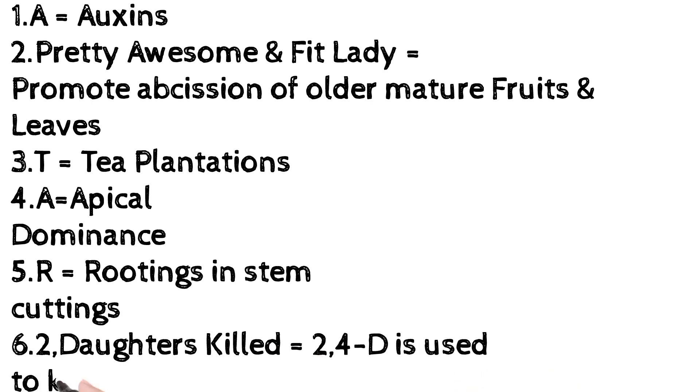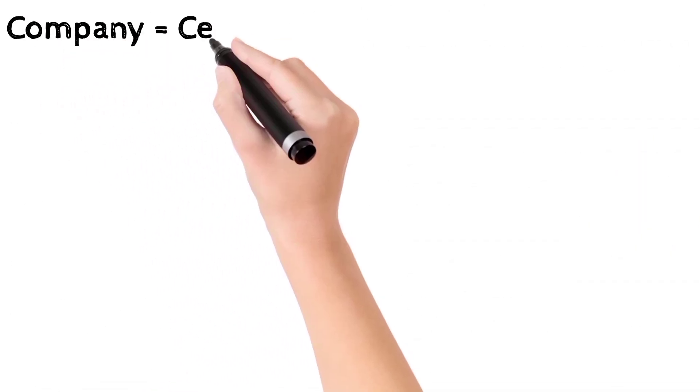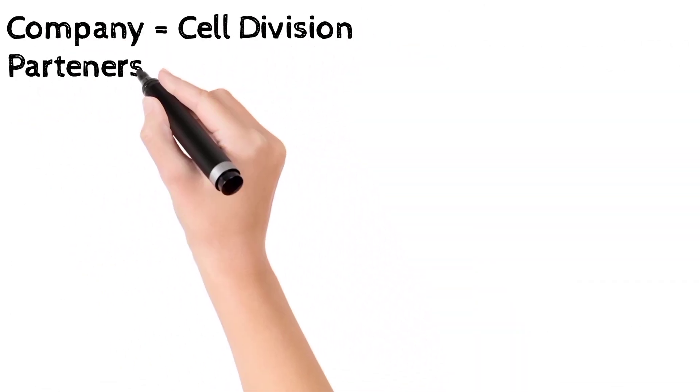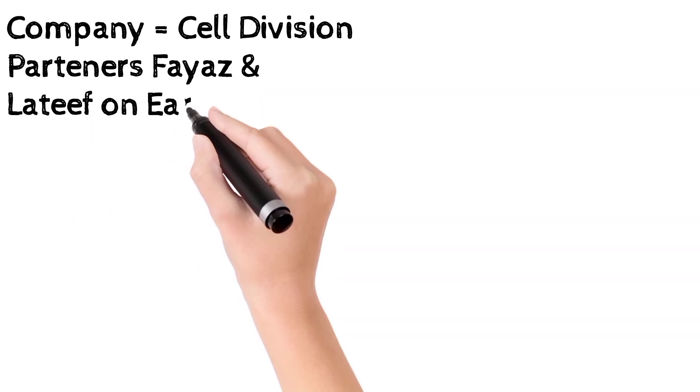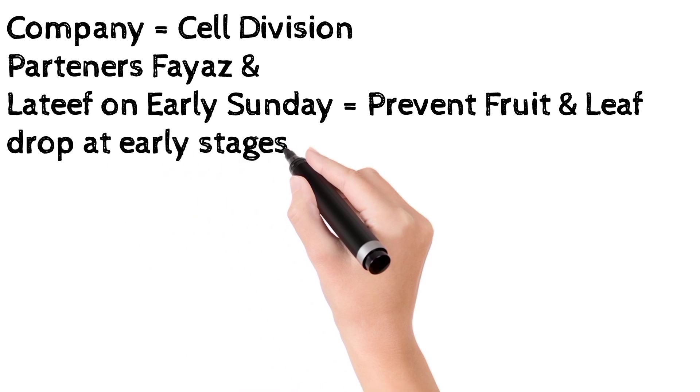Two Daughters Killed means 2,4-D is used to kill dicotyledon weeds. Company means cell division. Partners Fayaz and Latif on Early Sunday means prevent fruit and leaf drop at early stages.